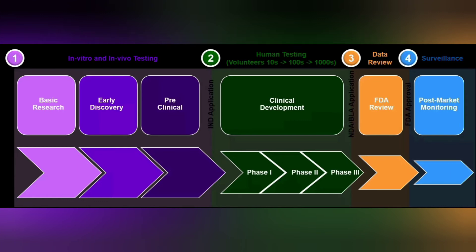Let's look at the summary. We have basic research and early discovery. In early discovery, we can identify and optimize. In this case, there are four or five drugs, or one or two drugs, that go to the pre-clinical stage. In the pre-clinical stage, we do animal studies — we check if the drug is effective and safe. If the drug is effective and safe in animal studies, then it will go to clinical development — clinical trials. There are four phases: Phase 1, Phase 2, Phase 3, and Phase 4. Phase 4 is post-marketing surveillance.